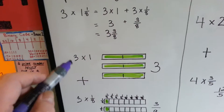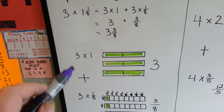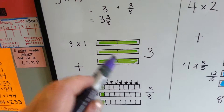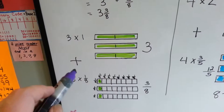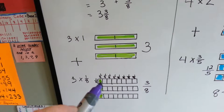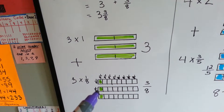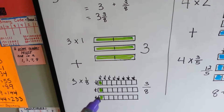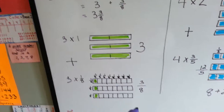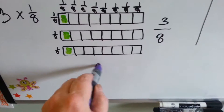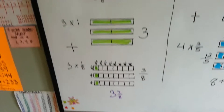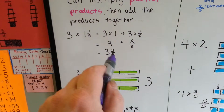3 plus 3 eighths equals 3 and 3 eighths. And here's the model: 3 times 1 and 1 eighth gives us 3 times 1 and 3 times 1 eighth. 3 times 1 gives us 3 ones, which is 3. 3 times 1 eighth — each piece is 1 eighth, and we get three of them, giving us 3 eighths. Add them together and we get 3 and 3 eighths.